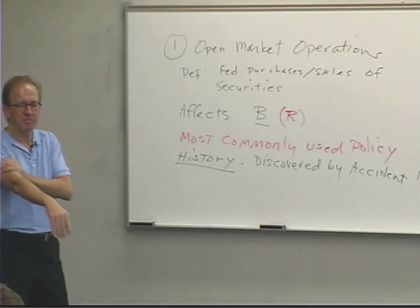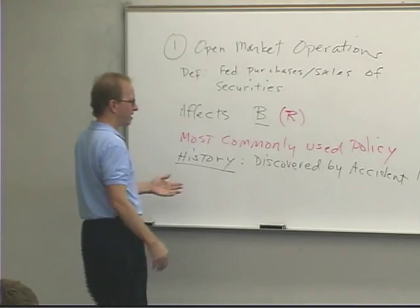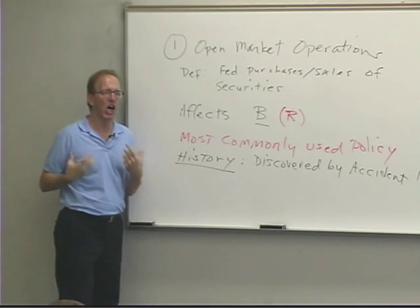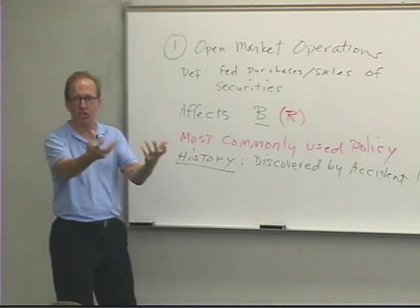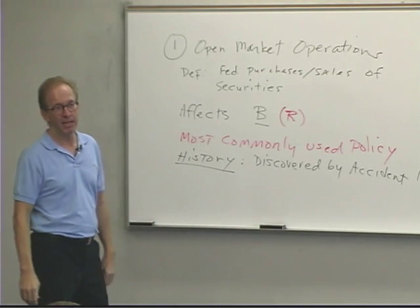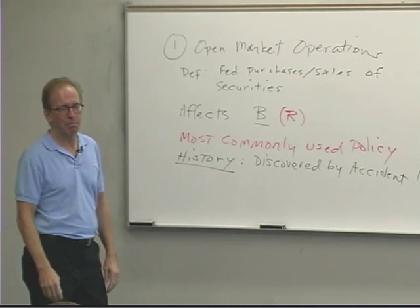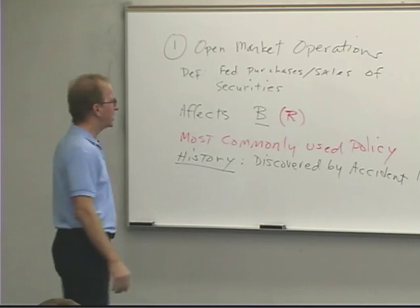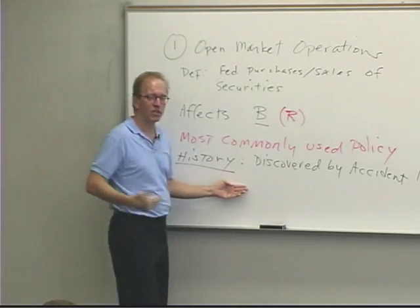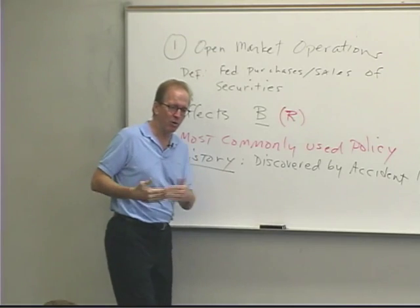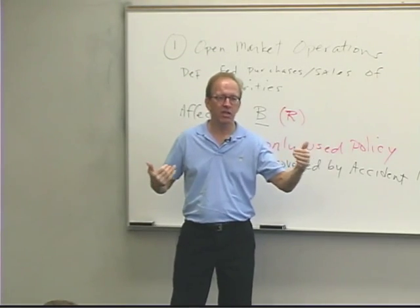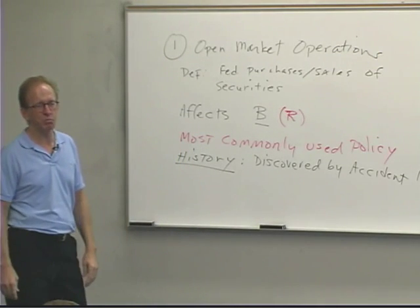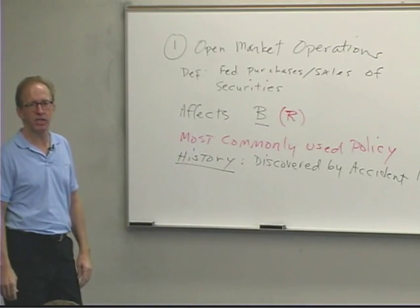They realized: if we want to increase bank reserves, we could just go out and buy bonds — not because we want interest income, but because we want to actively affect bank reserves. Open market operations took several years for smart people to figure out as they felt their way along, and then they said this is not about the Federal Reserve generating interest income — this is about managing monetary and credit conditions of the United States.